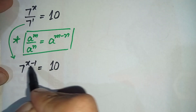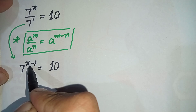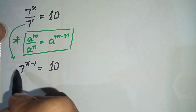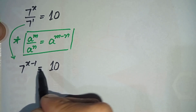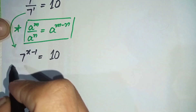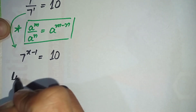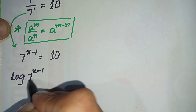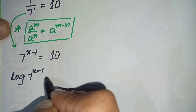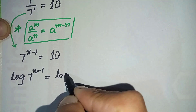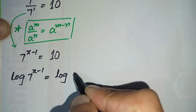Now since we need to find the value of x, we will take log on both sides. So this equation will become log of 7 raised to the power x minus 1 is equal to log of 10.